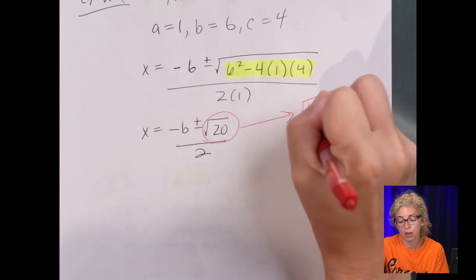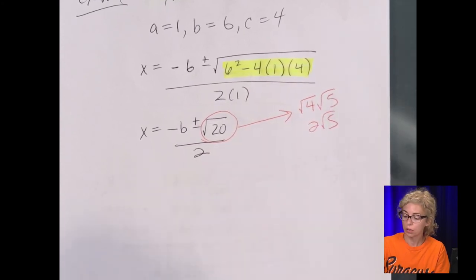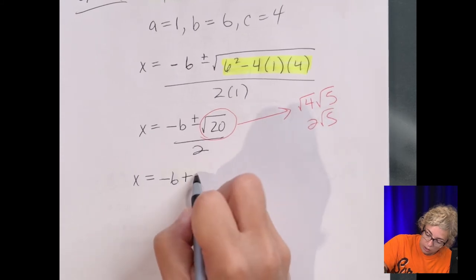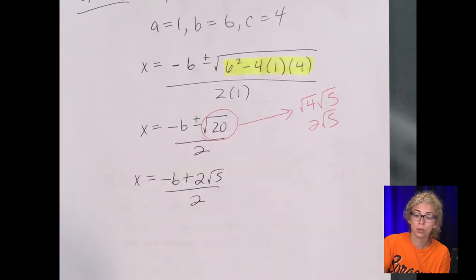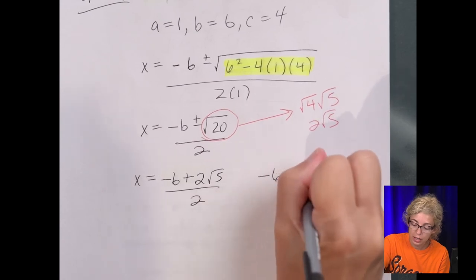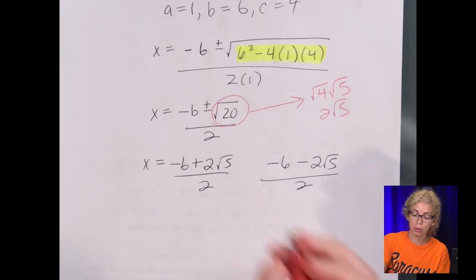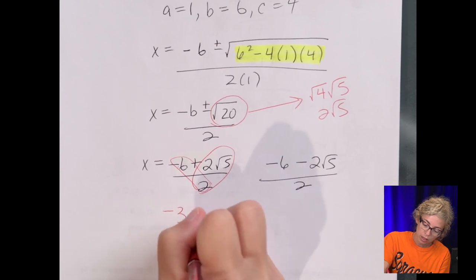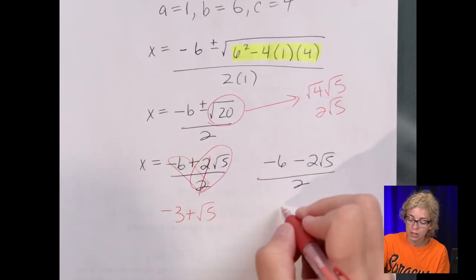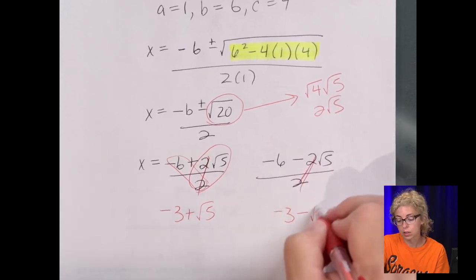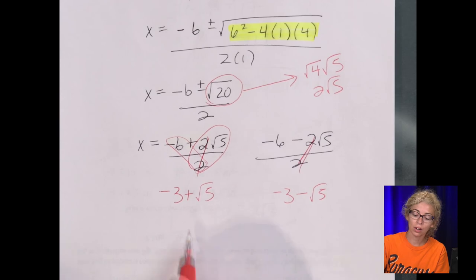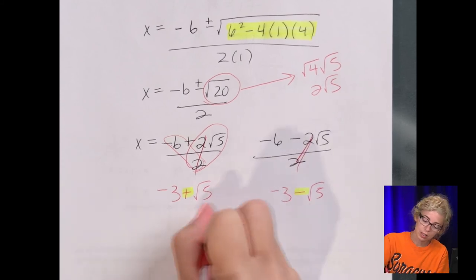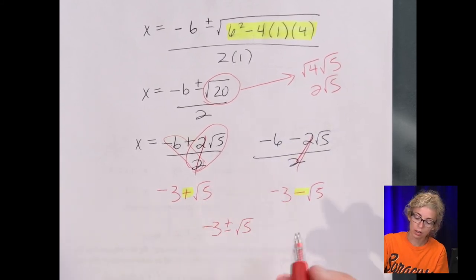20 is 4 times 5, or 2√5. So if I rewrite it, so x equals negative 6. One answer is with the plus. So plus 2√5, all over 2. And the other answer is negative 6 minus 2√5, all over 2. And then when we simplify it, we can divide both terms. So negative 6 over 2 is a negative 3, plus the 2's cancel radical 5. And again, negative 3 minus the 2's cancel radical 5. So together, this could be written, since it's the same except for one has a plus or a minus, it could be written as negative 3 plus or minus radical 5.